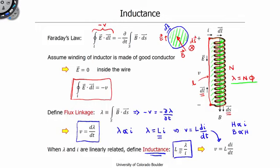Hence, this constant of proportionality L is the inductance of our coil, and that is how we define inductance: as the ratio of flux linkage to the current passing through the coil. We can now use this definition to determine the inductance of a number of different structures.